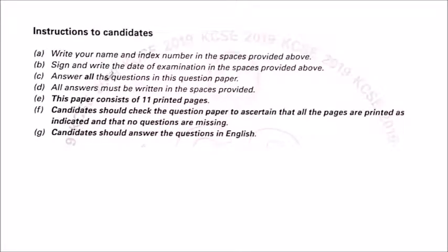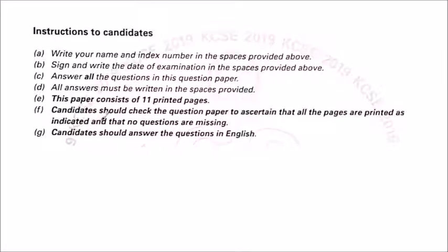The other part of this page contains instructions. First, write your name and index number in the spaces provided above. Sign and write the date of the examination in the spaces provided. Answer all the questions in this question paper — all your work is expected to be written in this paper, in the spaces provided. This paper consists of 11 printed pages, so confirm that before you start. Candidates should check that all pages are printed and no questions are missing. Answer questions in English only.